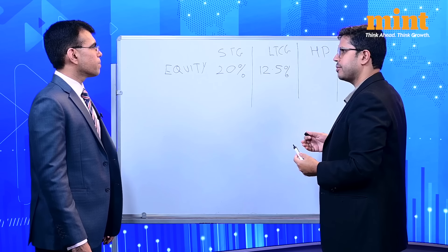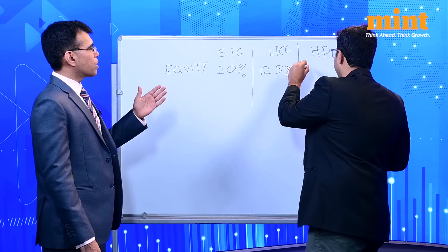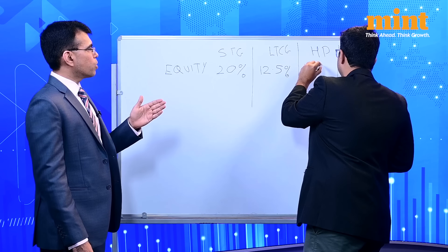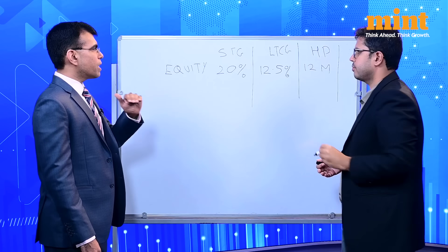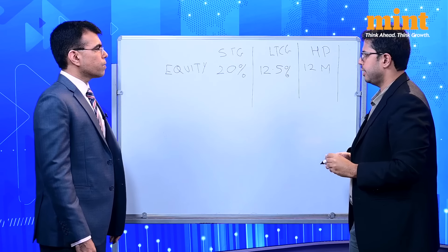How about the holding period? Holding period is the same. So earlier as well, short-term was less than 1 year and long-term was more than 1 year, that is 12 months. Now that remains the same. There is no change in this. So now this is for domestic equity, Indian equity.